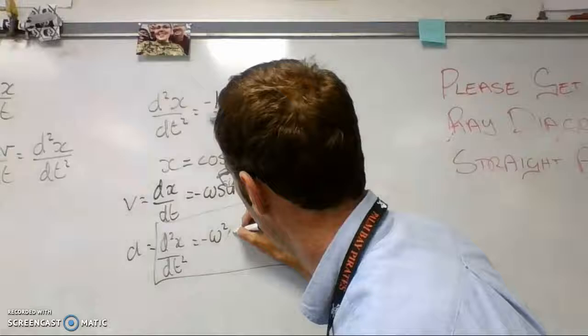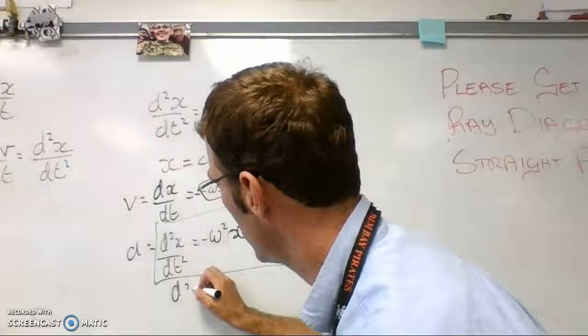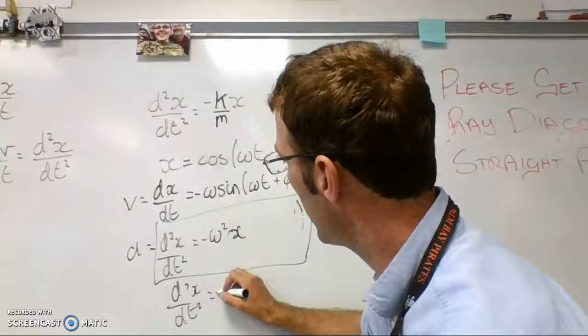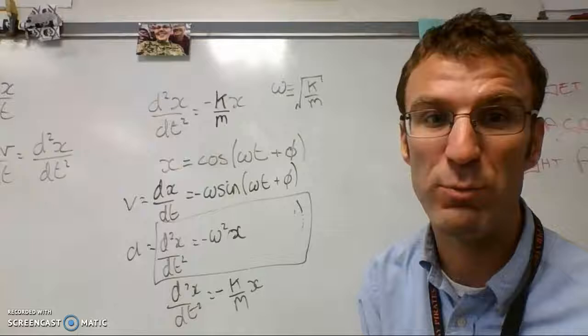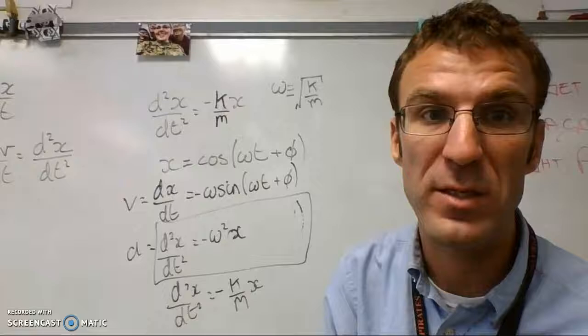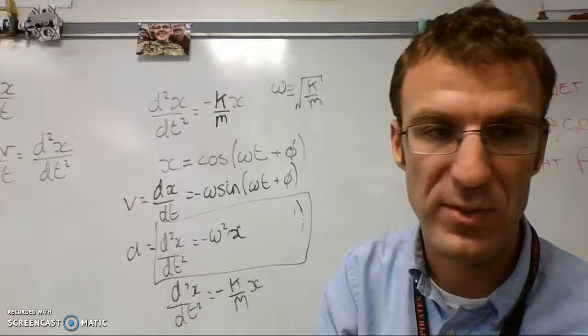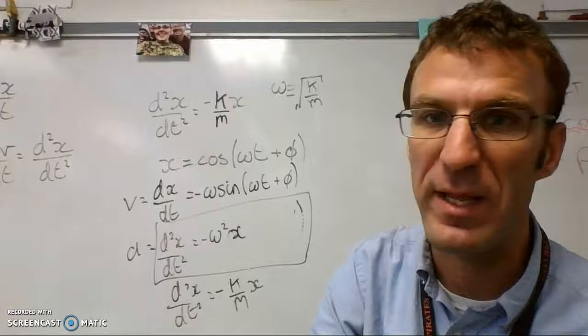And considering d squared x over dt squared equals, considering omega is the square root of k over m, I square that. I have k over m times x, which is the thing I wanted to get, which proves that that is the correct answer. So that is the function to describe the position of an oscillator with regards to time, as proved by calculus. So if you do not follow that, then that's okay. Just believe me that I'm not making this stuff up, and it is mathematically legit.